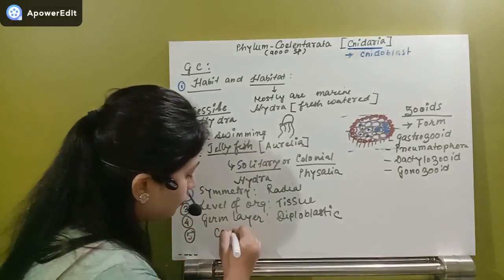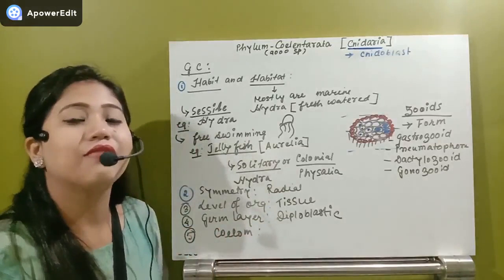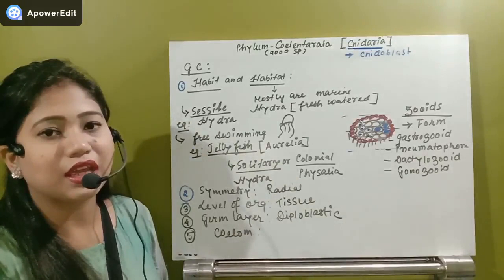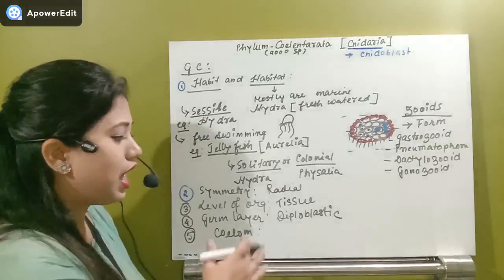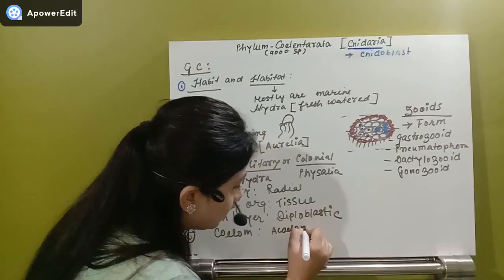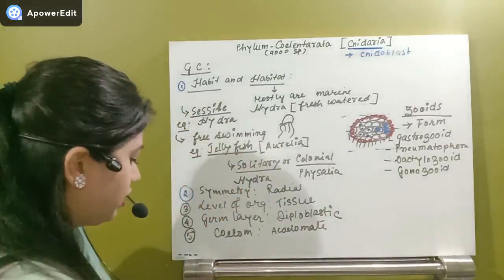Do Coelenterates have a coelom? No, because coelom is derived from mesoderm, and this organism is diploblastic — it does not have mesoderm. Therefore, this organism does not have any body cavity. These organisms are acoelomate.